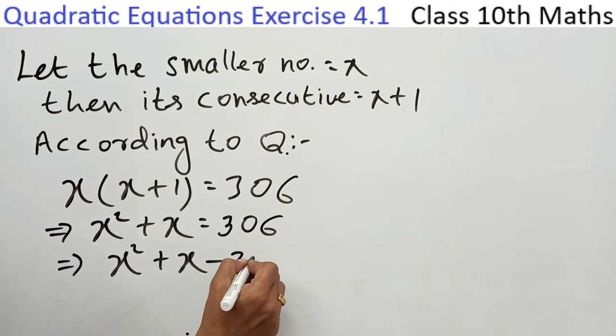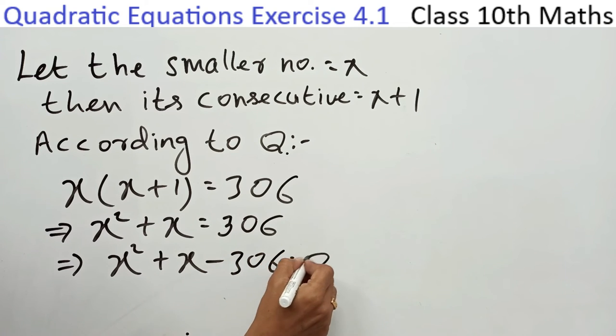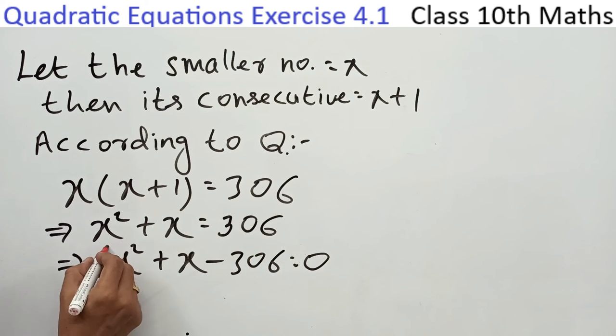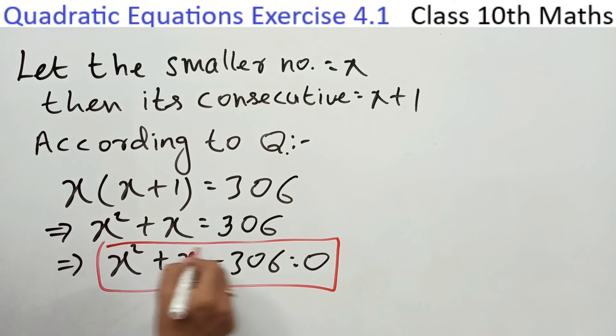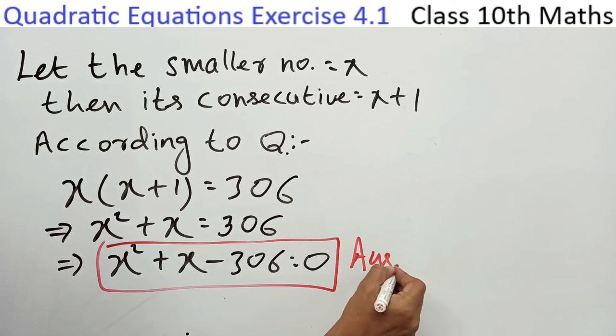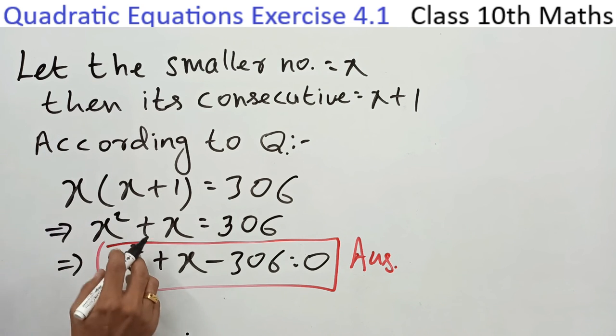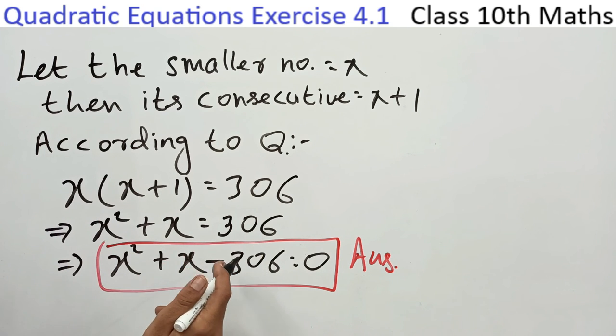Moving 306 to the other side: x squared plus x minus 306 equals zero. So this is our answer.